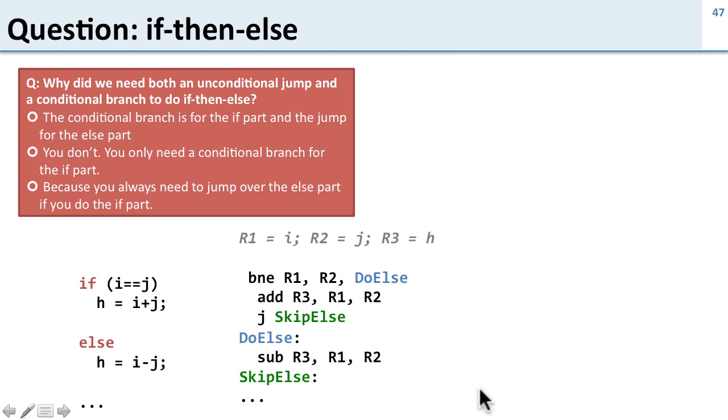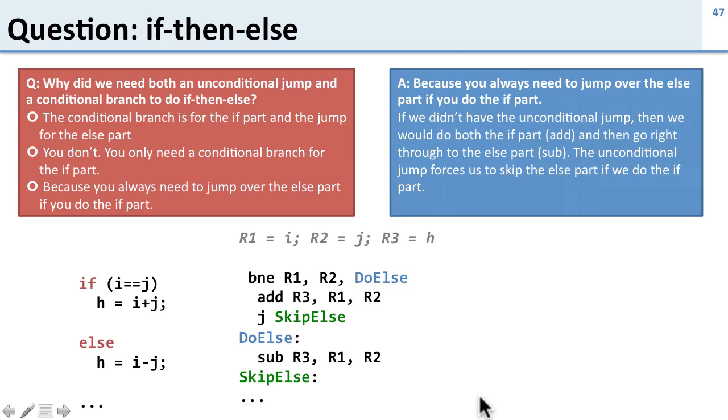Here's a question about if-then-else. Why did we need an unconditional jump and a conditional branch to do if-then-else? The reason is we always need to jump over the else part if we do the if part. If we're going to do the if part, we need the unconditional branch to skip the else part, and we need the conditional branch to decide whether to do the if part or jump to the else part. We need both to make if-then-else work.